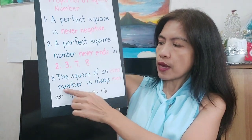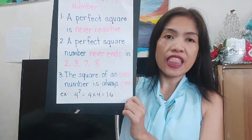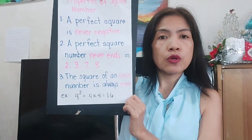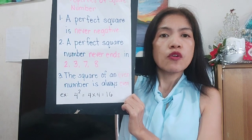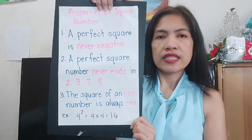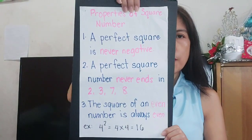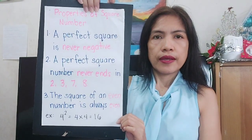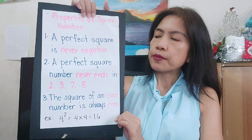The square of an even number is always an even number. For example, 4 is an even number, so when you square it, 4 times 4 is 16. That's property 3 of square numbers.